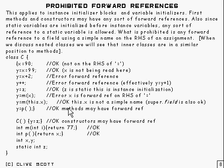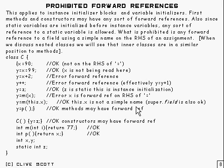y equals m(this.x) is OK because this.x is not a simple name. You've gone out of your way to get the value of x like that, so the compiler lets you get away with it. Similarly, super followed by a field reference would be OK as well - that's not a simple name, so you can do it.